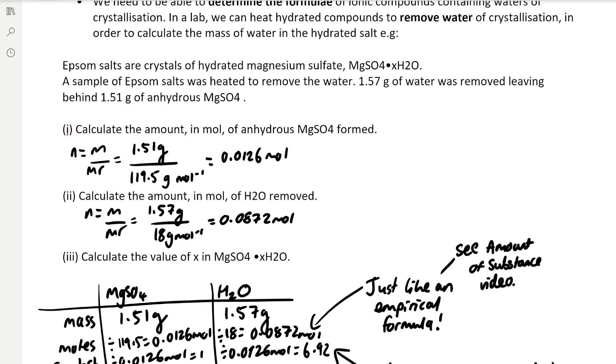To calculate the amount of moles of water removed, we divide the mass of water removed by the MR of water, which is 18 grams per mole, and that gives us 0.0872 moles.